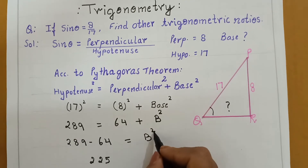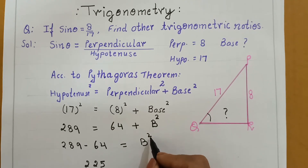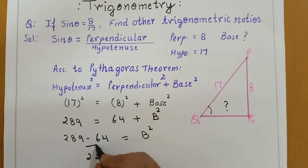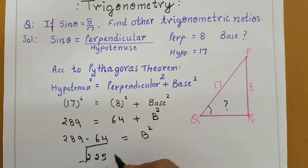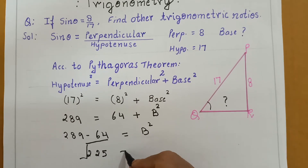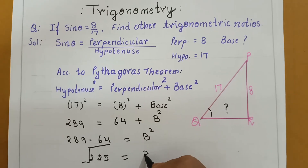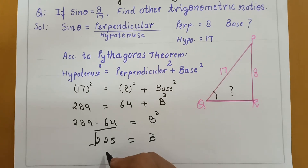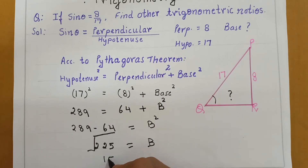And whenever we remove the square then it will be of square root. The square root of 225 we will solve to get 15.